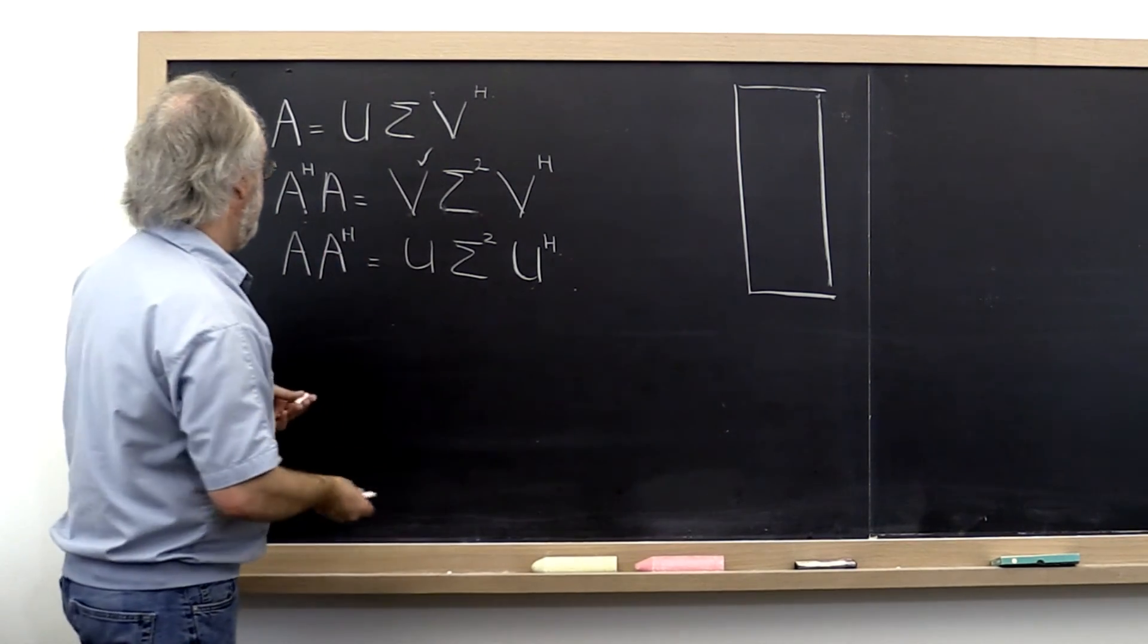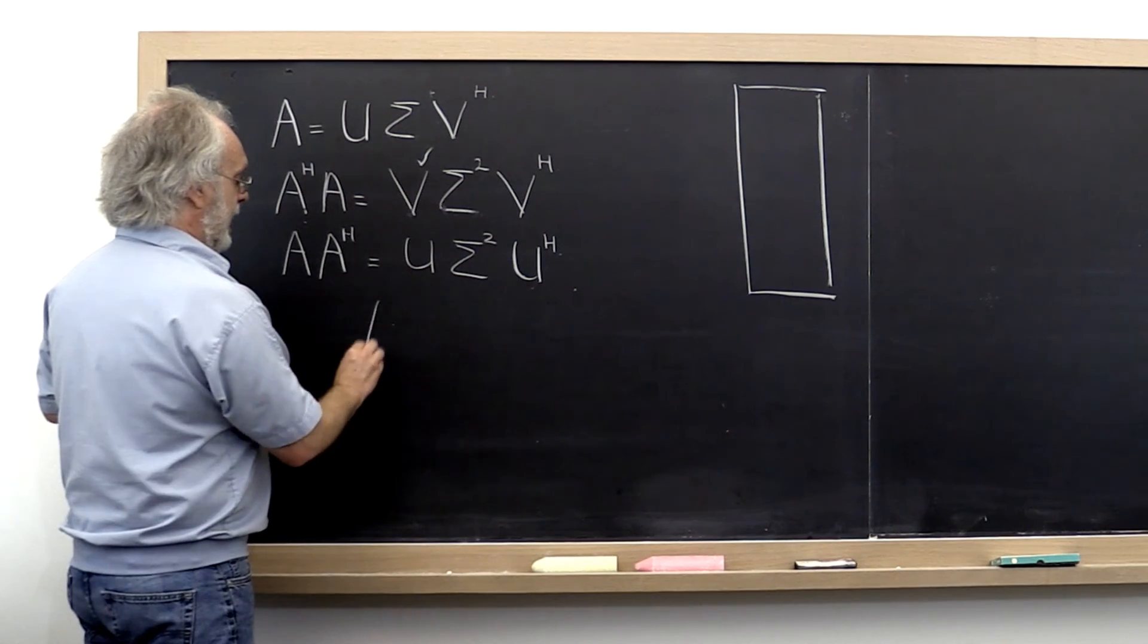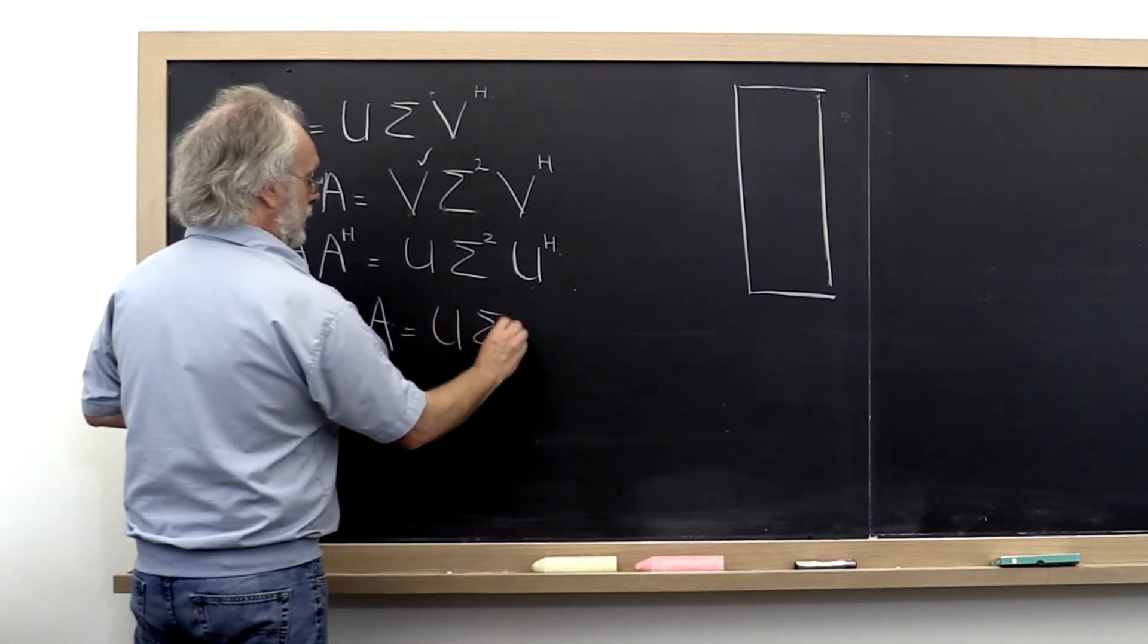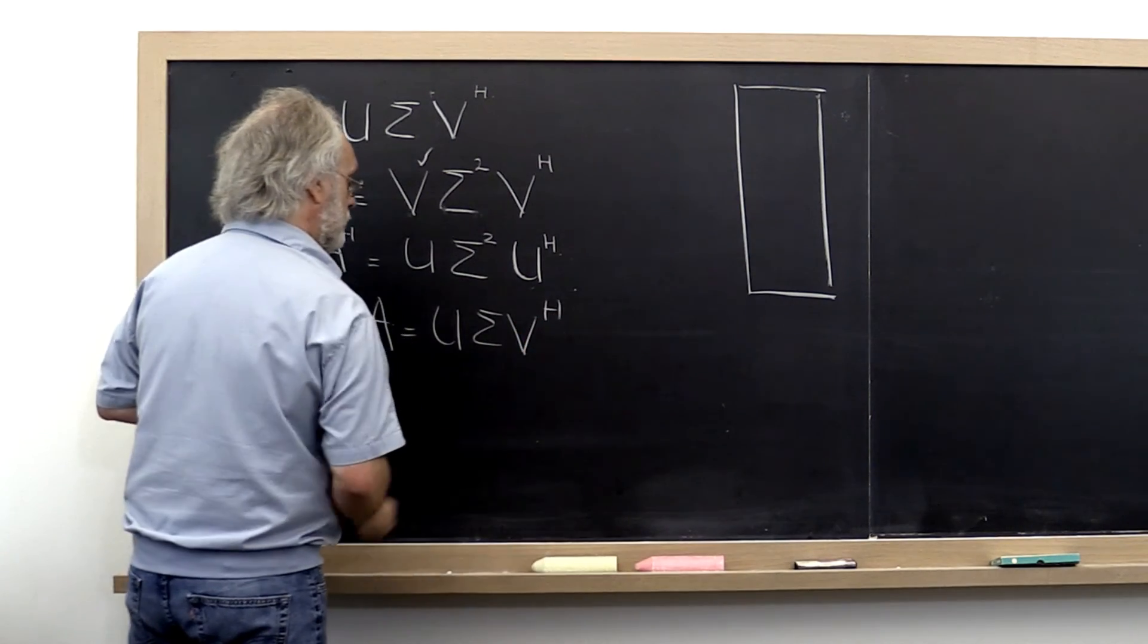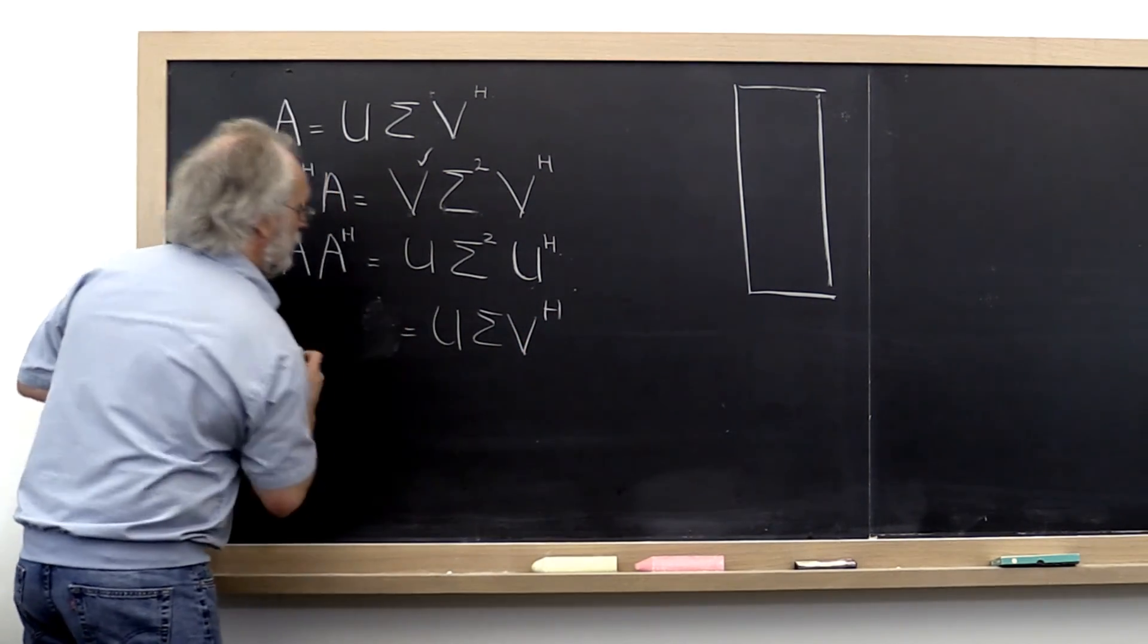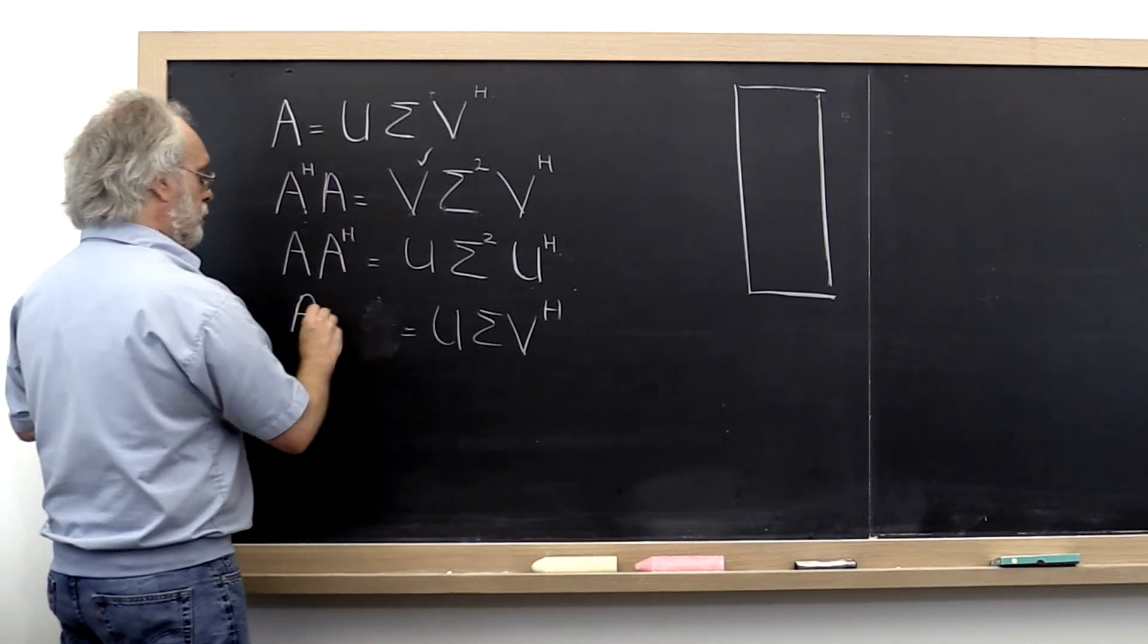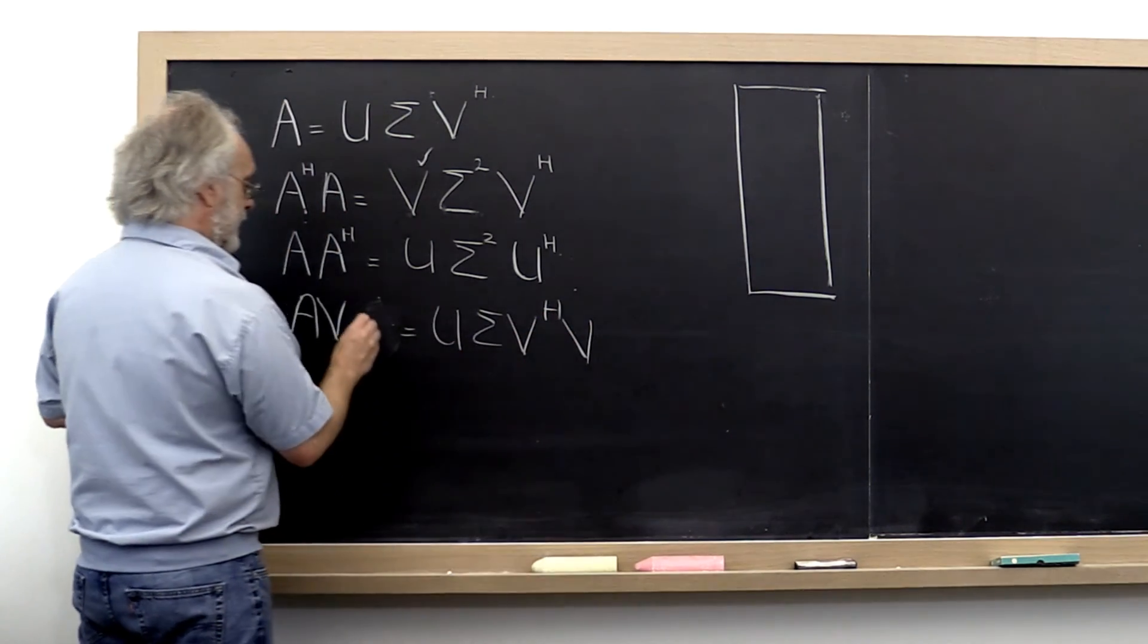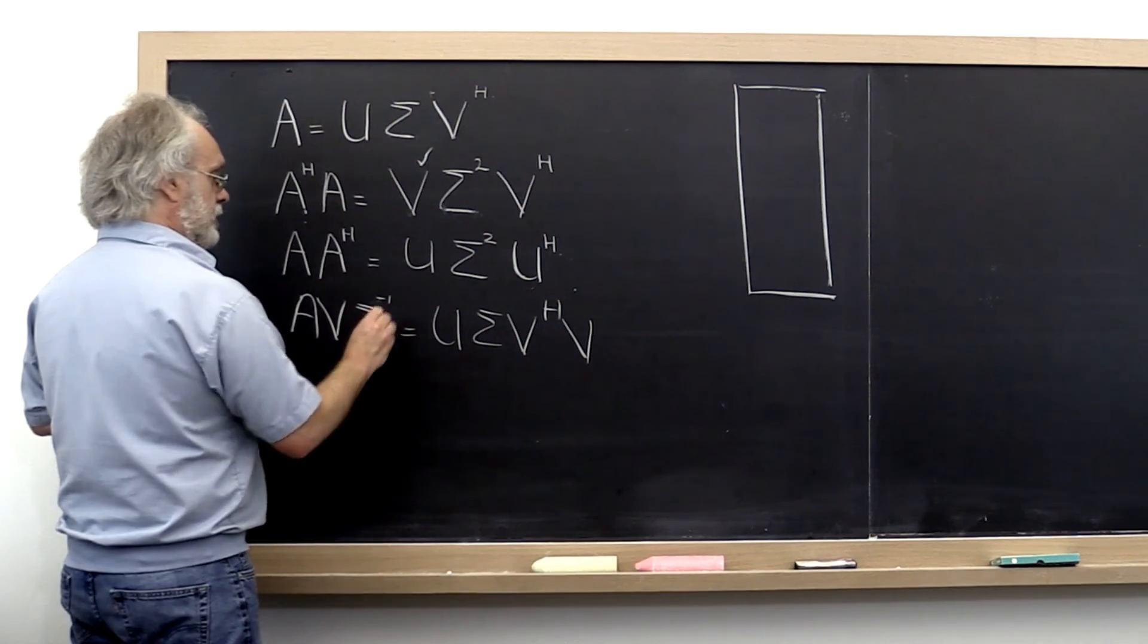Now once we have that, we know A = U Sigma V^H. So we can rearrange this equation, bringing V and Sigma inverse over to isolate U on the left.